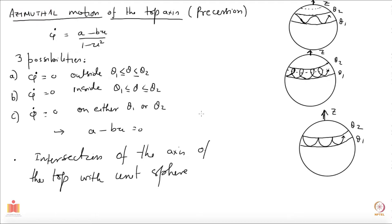We saw that the top axis can make these kinds of motion which were projected on a unit sphere. There are three possibilities corresponding to phi dot being outside theta 1 and theta 2, the limiting values, or it could be inside, or could be on one of the limits of theta.